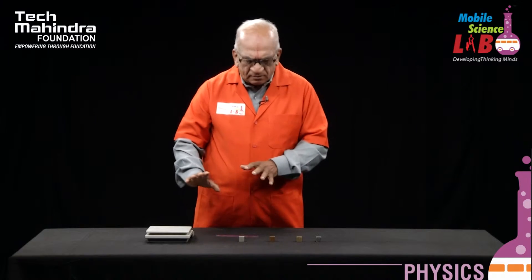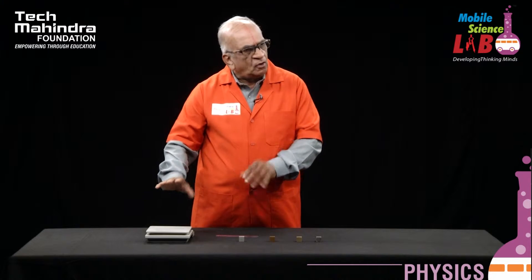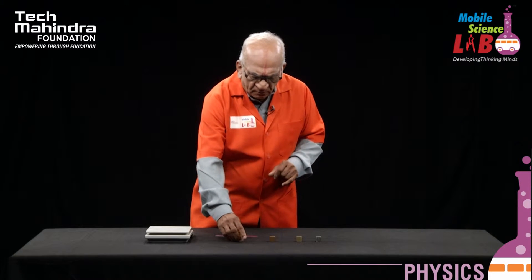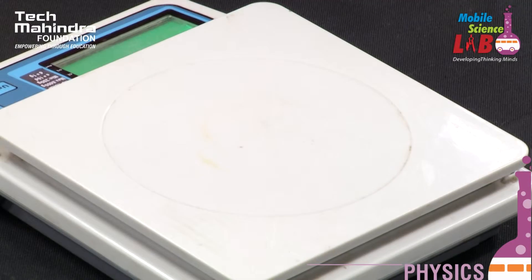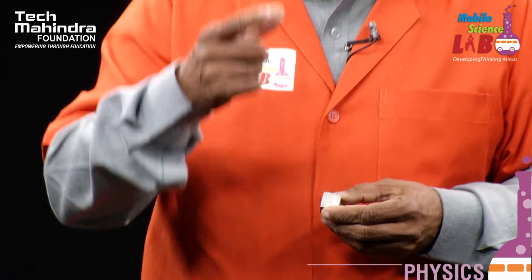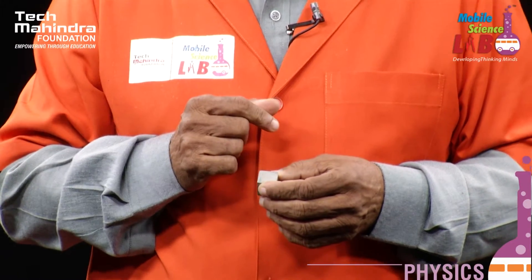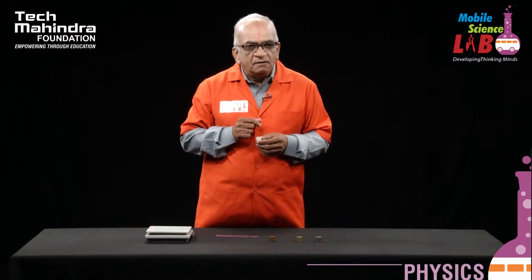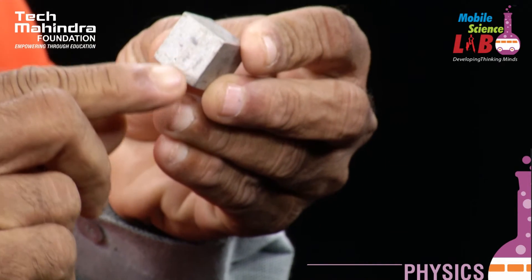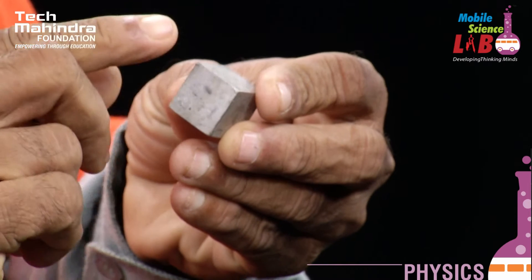The first phase of our experiment is over. Let us measure the volume. How do you measure the volume of a cuboid? The volume of a cuboid is length into breadth into height.